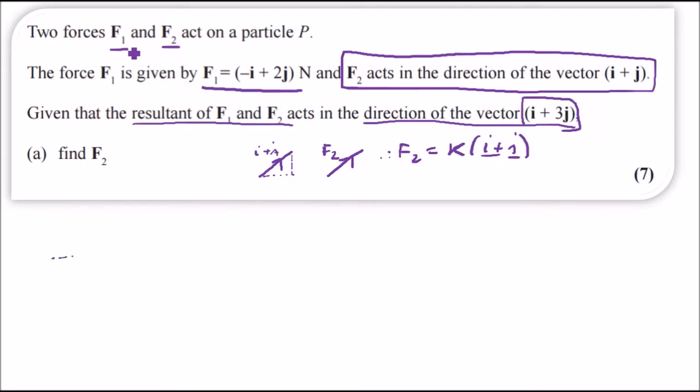So how does i plus 3j look? It's like this, it's like one across and then three up, so something like this, let's call this i plus 3j, and we know that f1 plus f2 also moves in that direction, so we call this f1 plus f2.